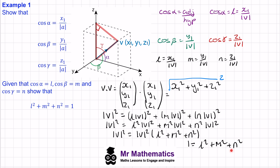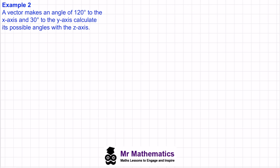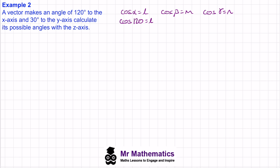Now we can use this formula to solve problems. In example 2, we're told a vector makes an angle of 120 degrees to the x-axis and 30 degrees to the y-axis, and we need to find its possible angles with the z-axis. We know cos alpha = L, cos beta = M, cos gamma = N. So cos(120°) = L = −1/2, and cos(30°) = M = √3/2.